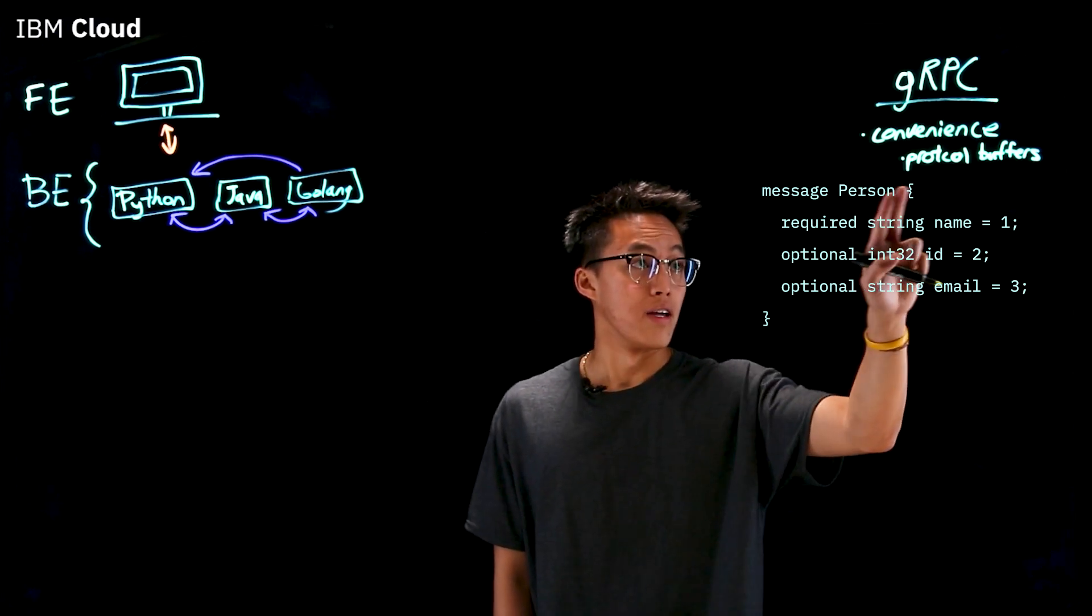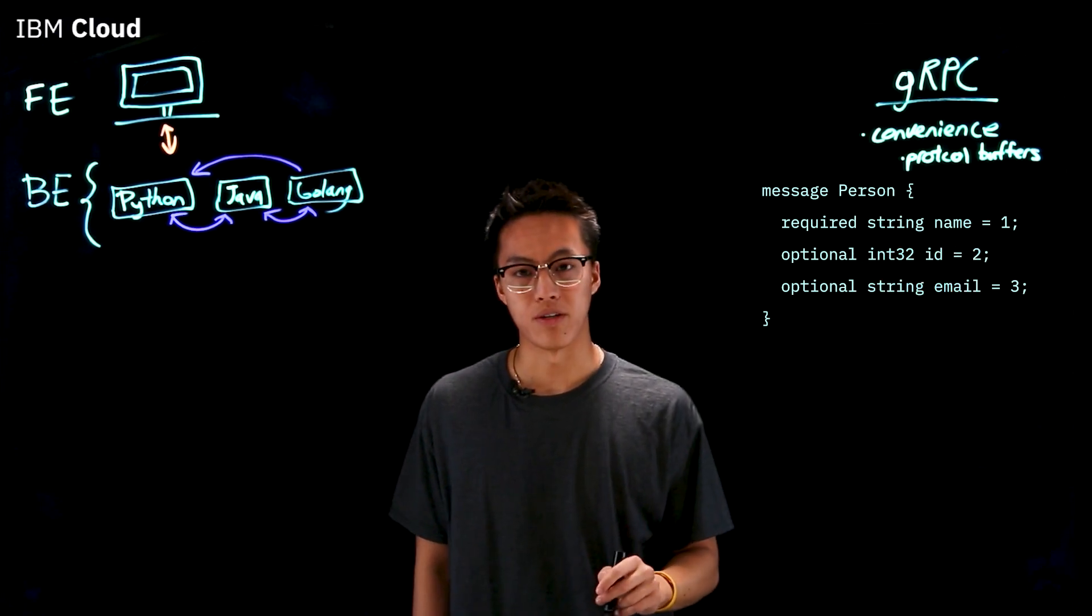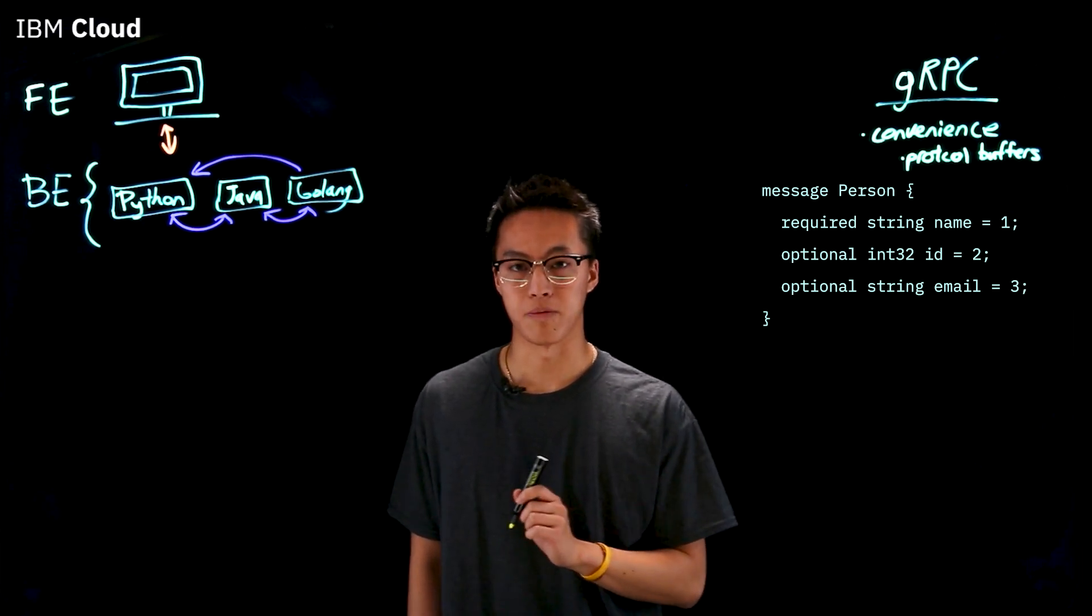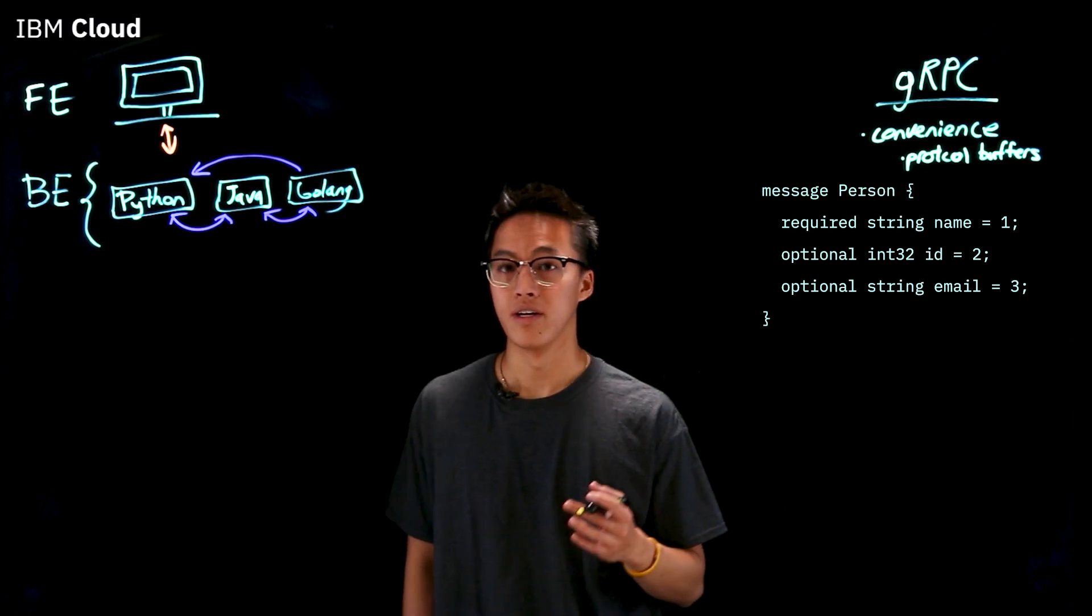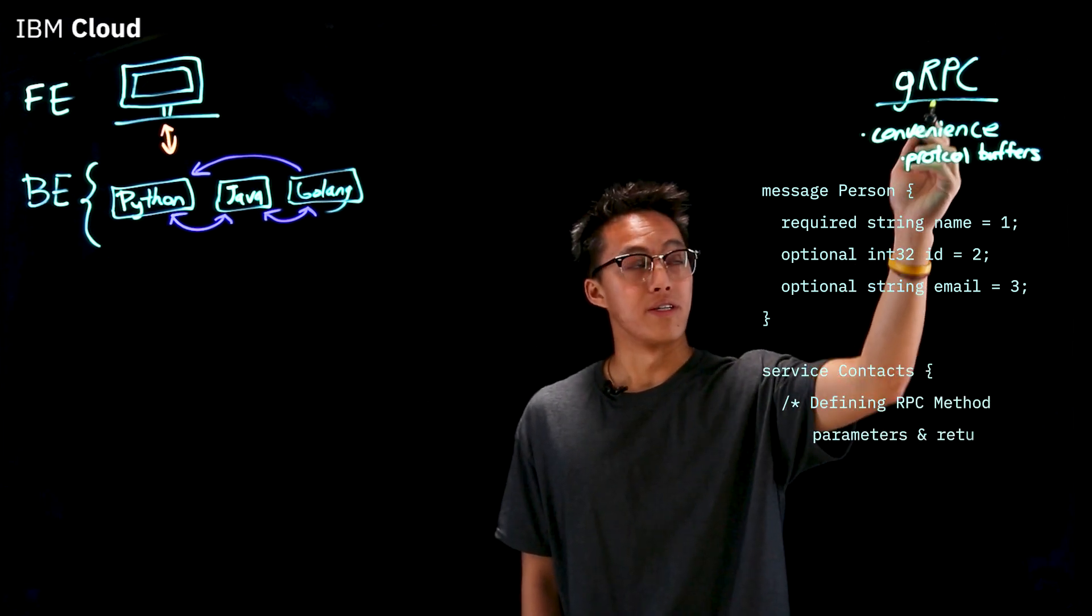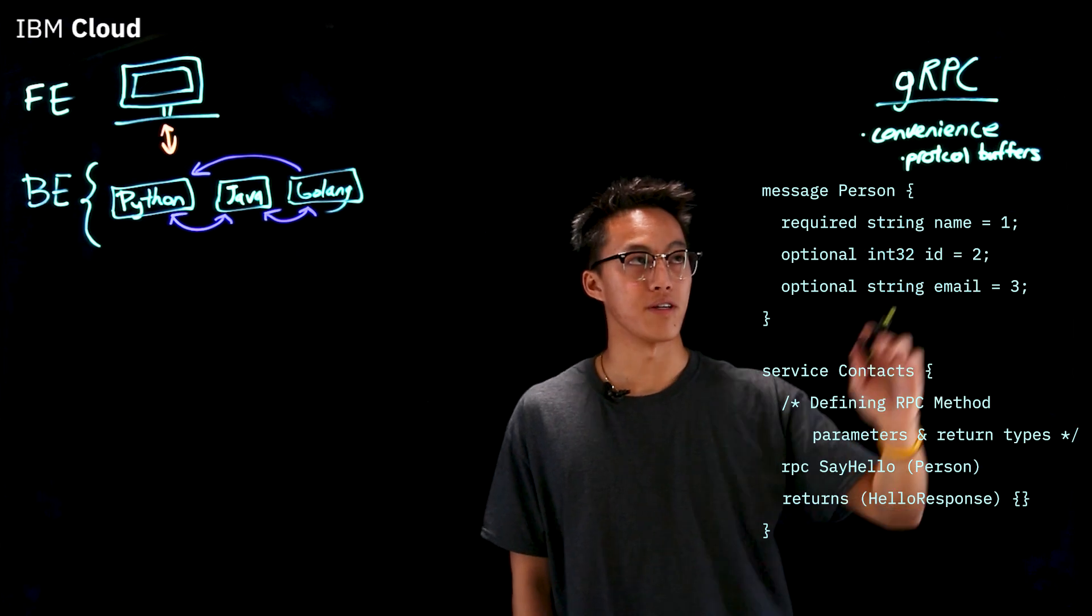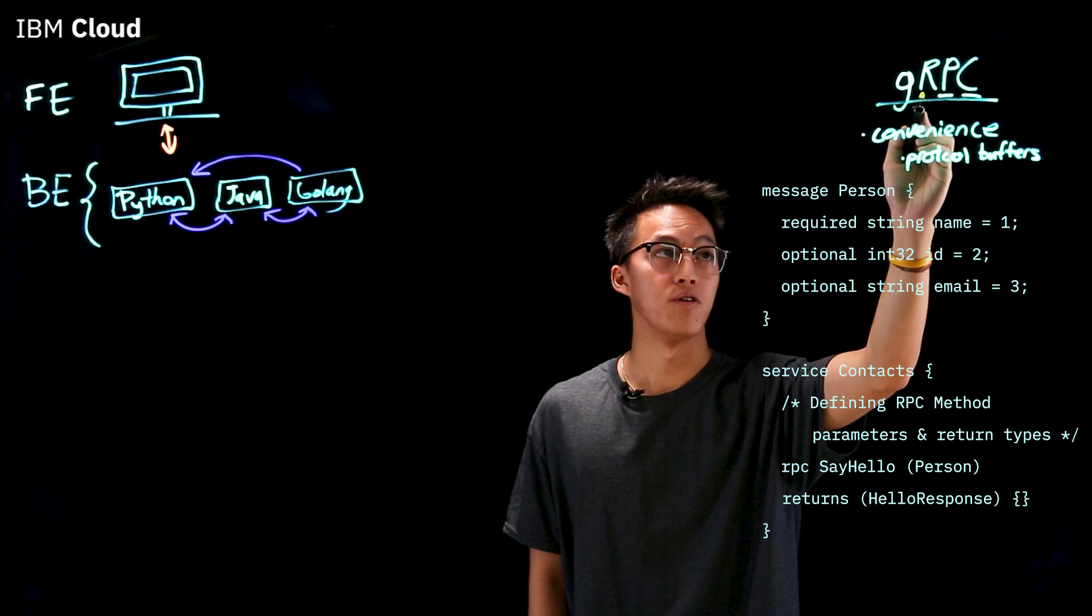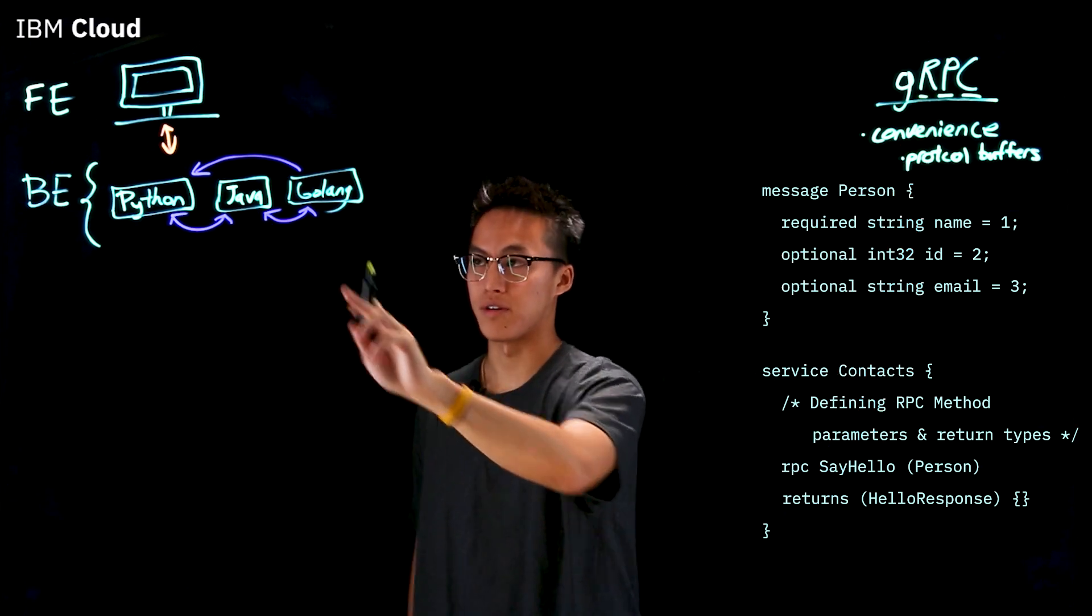On top of that, in the proto file for the protocol buffer, you also define the procedures that you expect to expose. These are essentially defining which procedures, so RPC standing for remote procedure calls, you're essentially defining which procedures are callable remotely from other microservices.